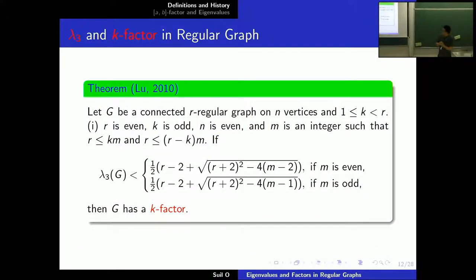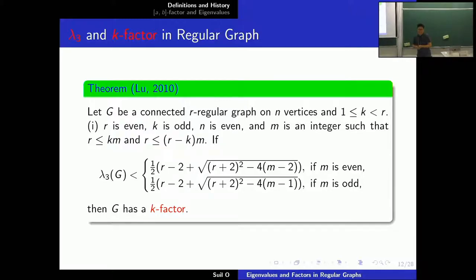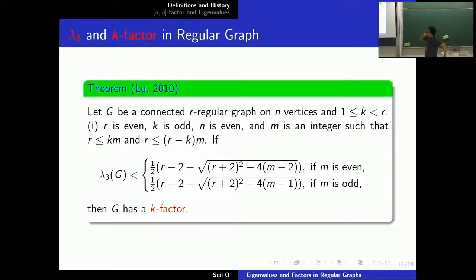And Lou at Shanghai Jiao Tong University — if you attended the KMS conference last fall semester, then probably you know him. I actually invited him to the conference. If I have a chance to visit China, I would visit him because he's good at factor theory. Anyway, he found an eigenvalue condition to guarantee the existence of a K factor in a connected R-regular graph. When M equals 1, that just gives R, and if the graph is connected, the second largest eigenvalue is smaller than R, so there's nothing to do. But if M is bigger than 1, we can still guarantee the existence of a K factor with this eigenvalue condition.